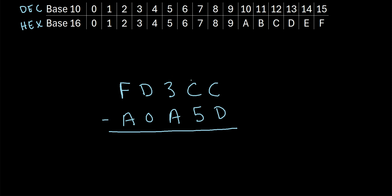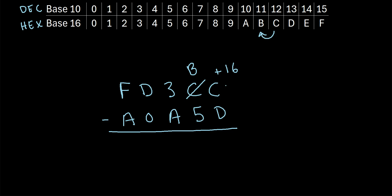Let's try another one. Let's say we have FD3CC minus A0A5D. Starting with the first column: C minus D — C is less than D, so we can't perform that subtraction. We borrow from the next column, crossing out the C and making it a B (one less than C in hexadecimal), and we add 16 to this column. So we have C plus 16: C is 12, so 12 plus 16 is 28. Then 28 minus D is 28 minus 13, which is 15. And in the hex system, F represents 15, so we write an F.